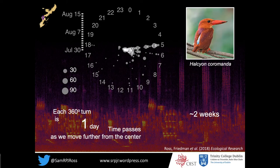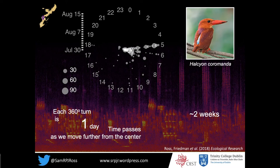Here's every time the Ruddy Kingfisher calls during a two-week period in summer of 2016, starting at the center. Days are advancing as we move out from the center, and it's a 24-hour clock, so we've got midnight at the top and midday at the bottom, and the size of the bubble represents the number of calls detected. The main thing I want you to take away is that we can see patterns emerging — most calls of this species at this site are between 5 and 7 in the morning.